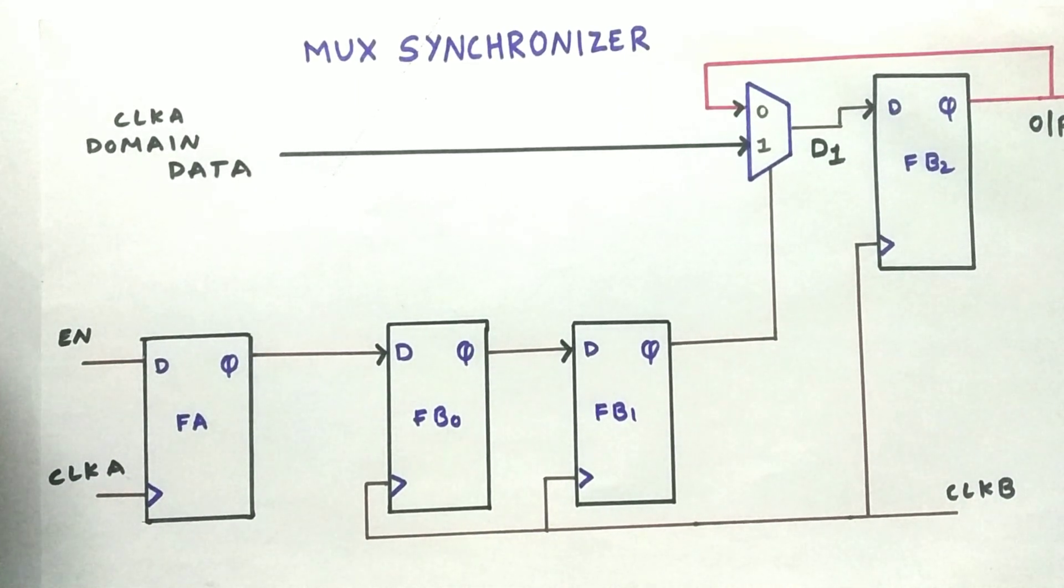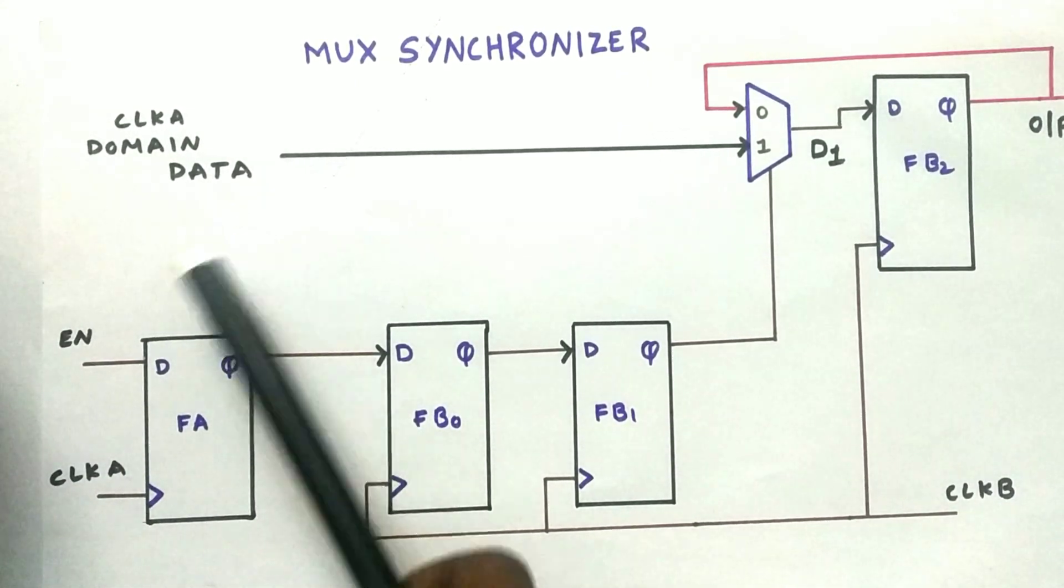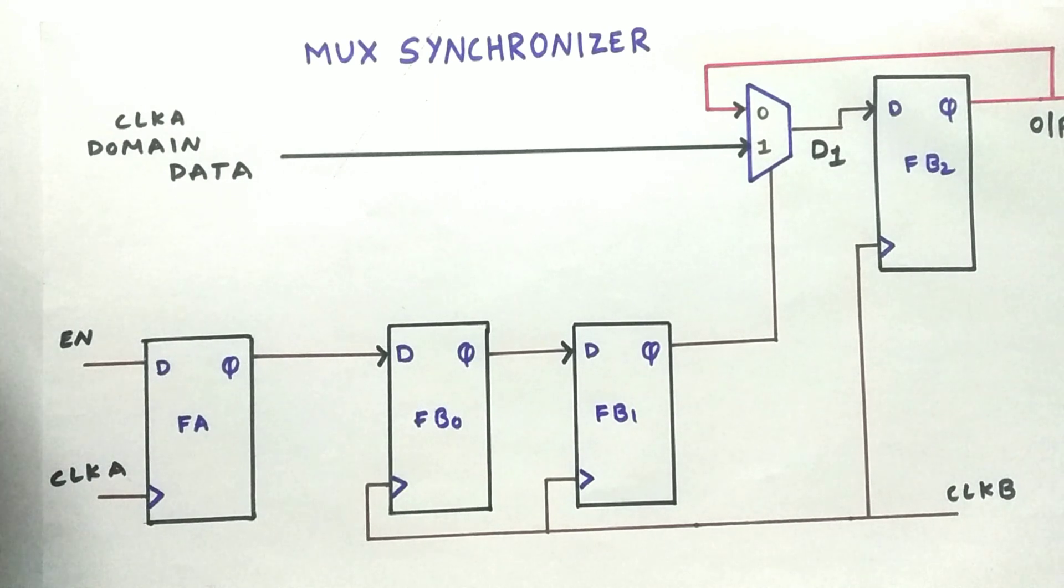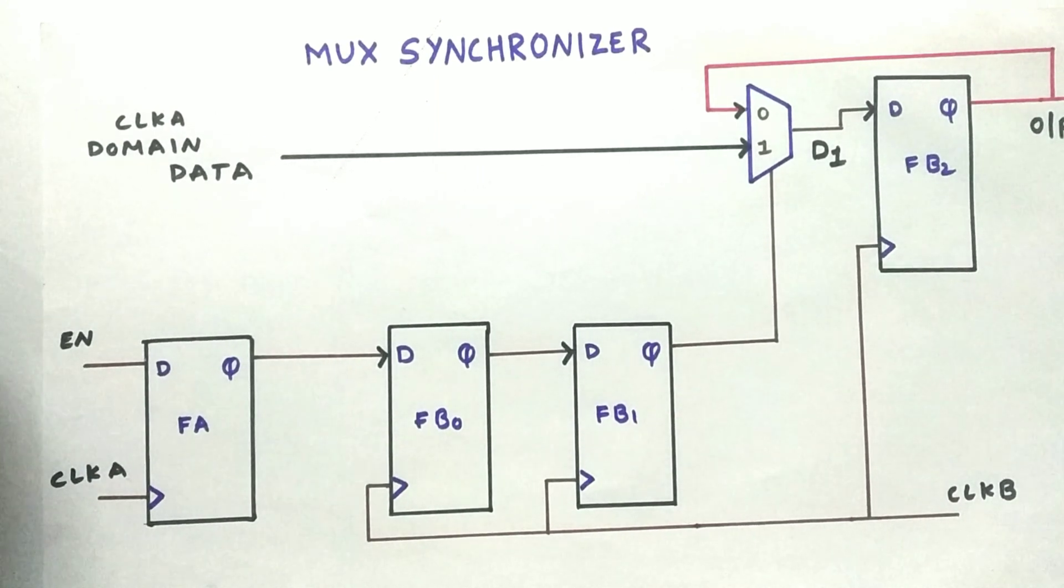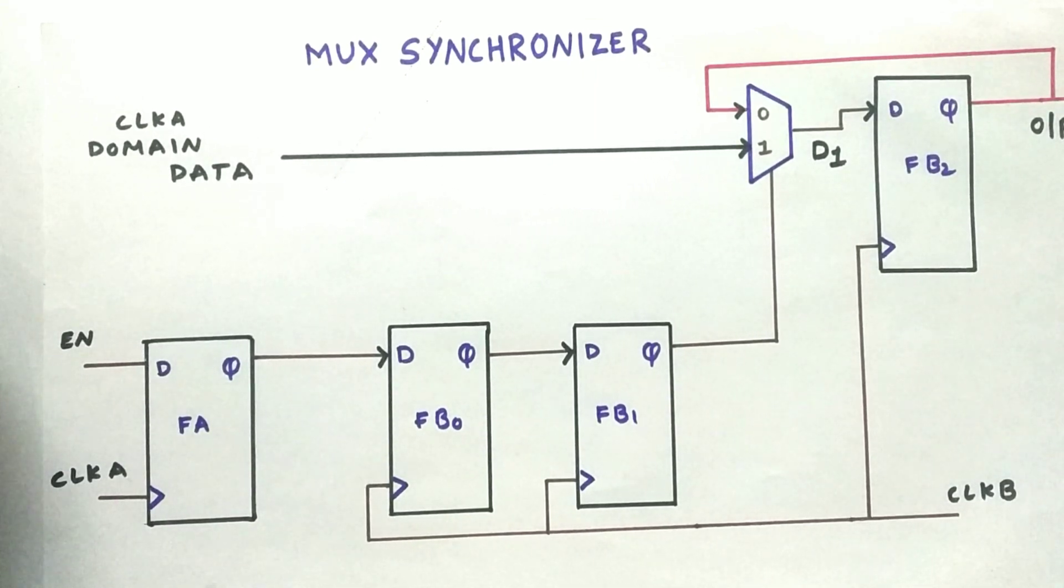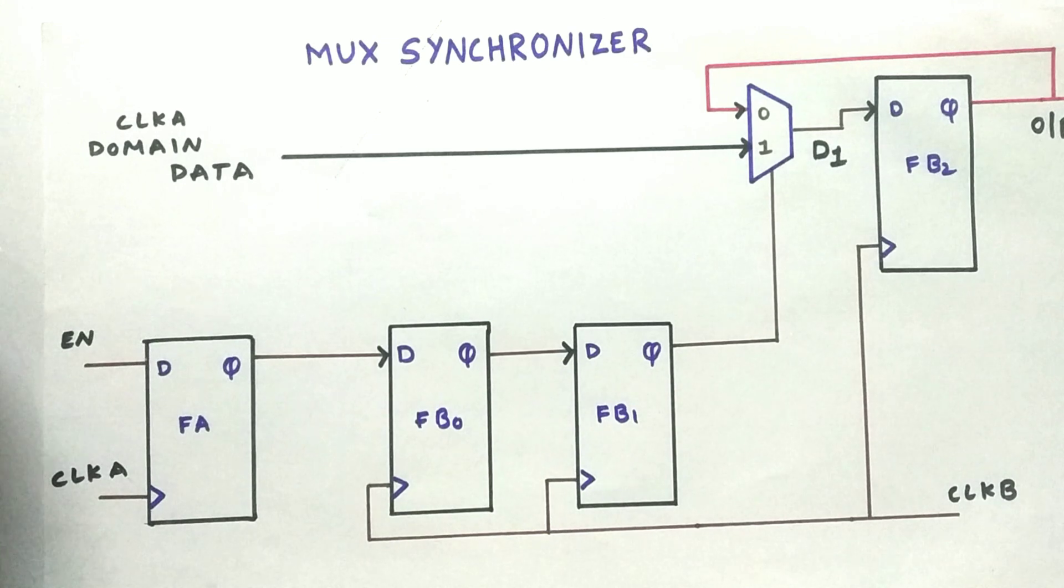One more important point is that we should not change the data frequently. We cannot change the data very frequently. That's a major disadvantage of a MUX synchronizer. One more problem is that we cannot know whether the output is correct or not. The acknowledgement is not sent back from clock B to clock A domain. So there's no handshake in it. This is basics about the MUX synchronizer.